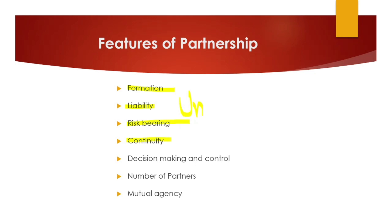Continuity — in sole proprietorship, if the owner dies or faces some incapacitating condition, the business usually stops. But in partnership, the death or insanity of a partner will not raise continuity questions for the firm. The business continues irrespective of such events affecting individual partners.